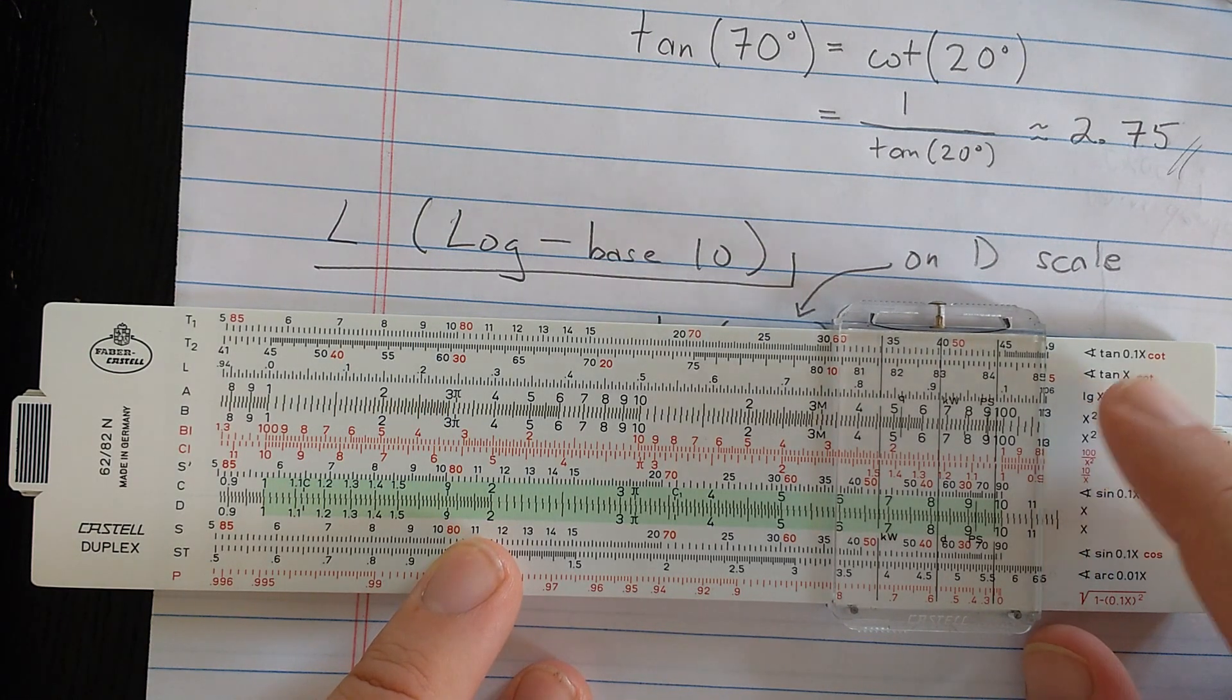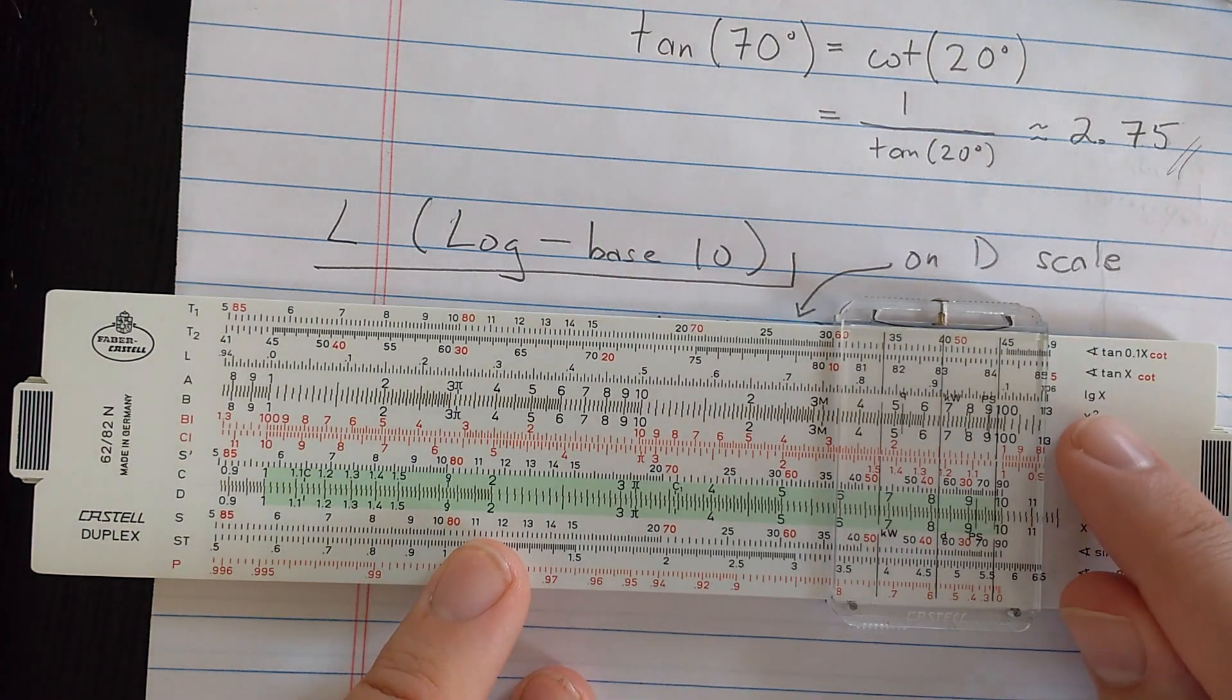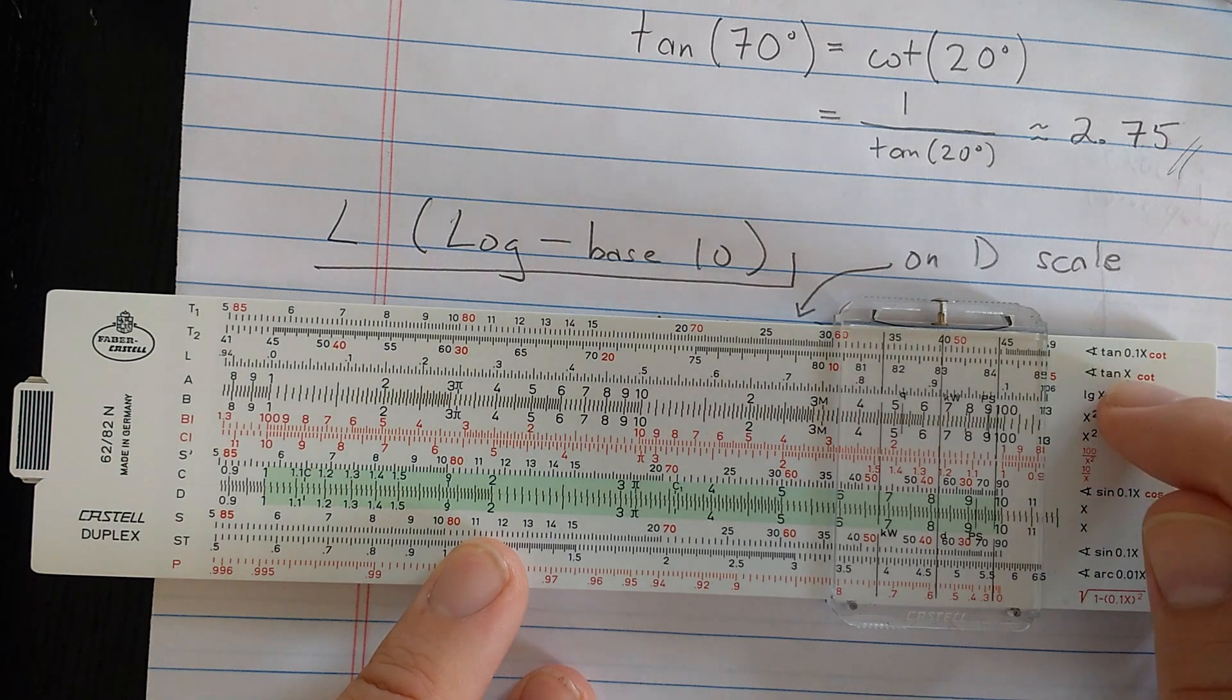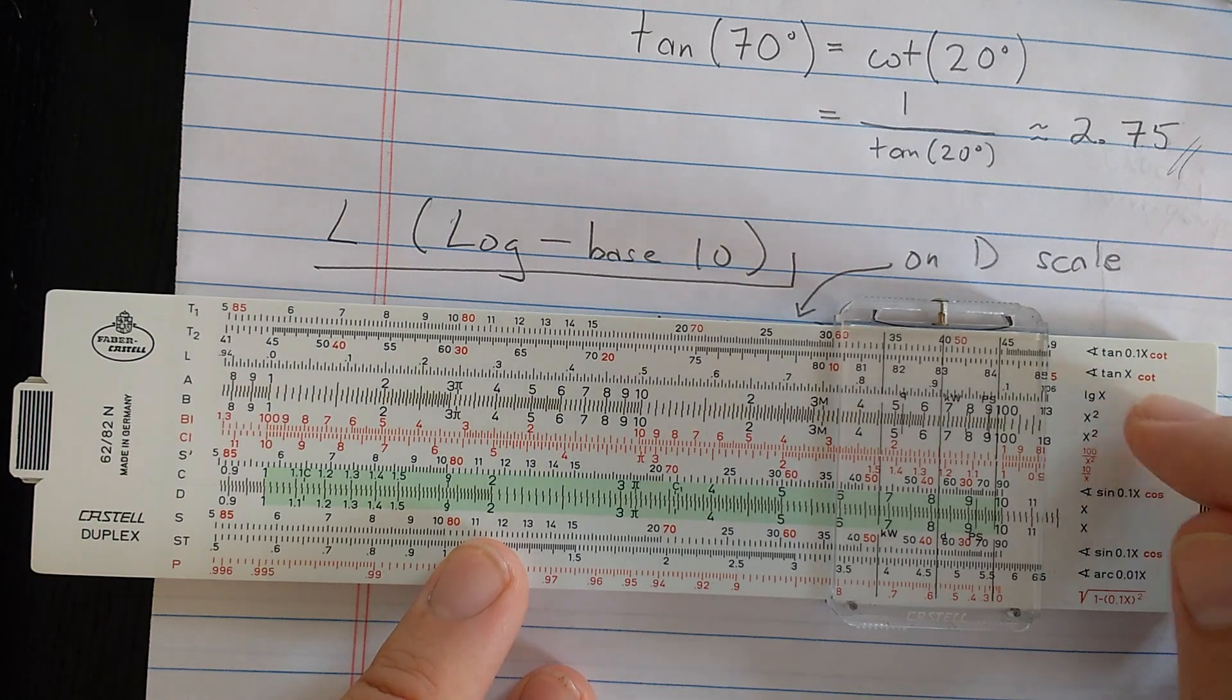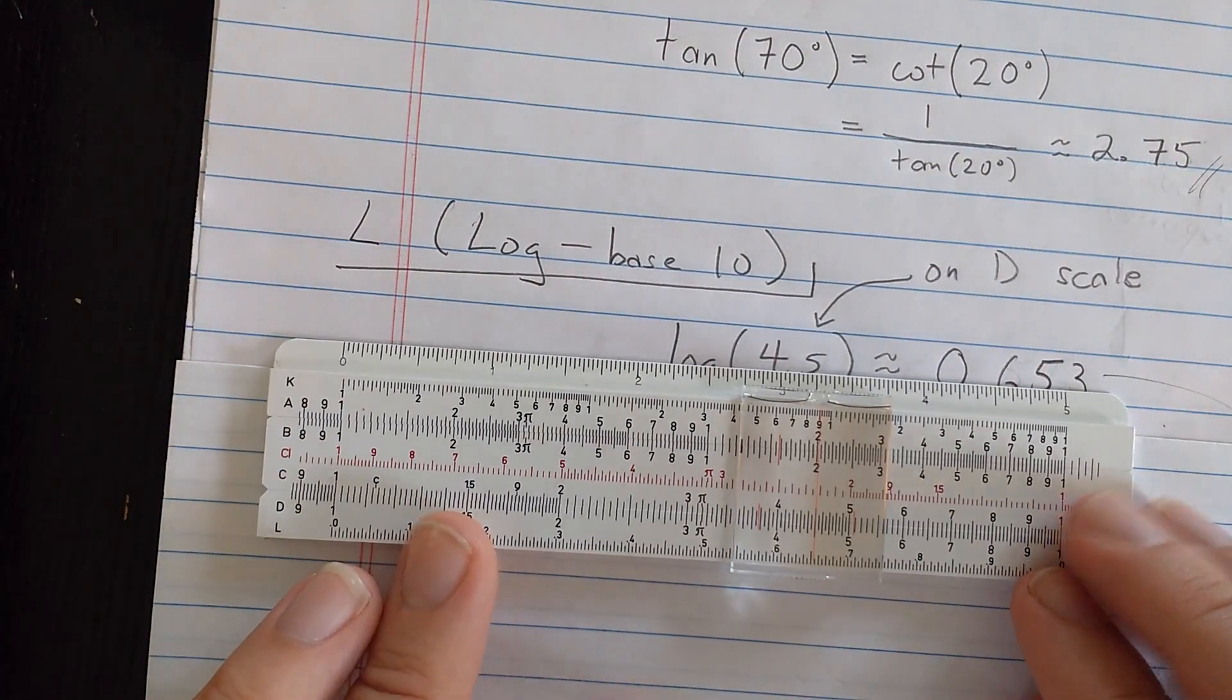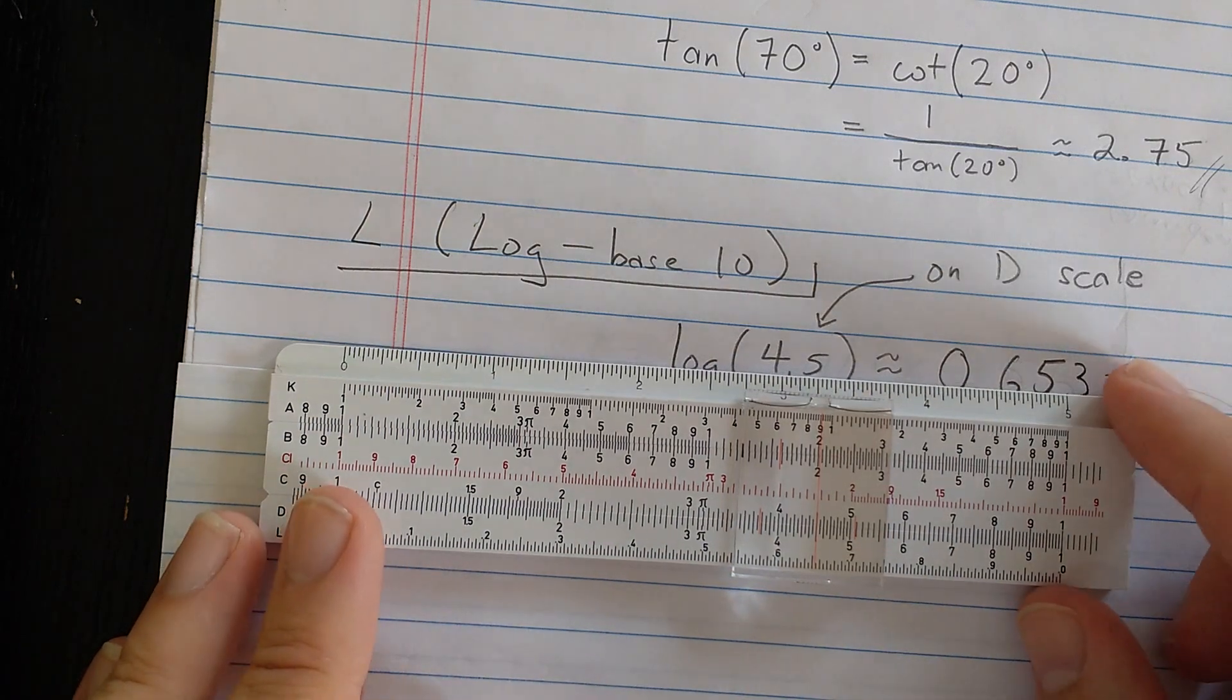But the L scale is simply log of X. So it doesn't do inverse when you go from C or D to L like the sine and the tangent scales do. It actually just computes log. Now, interesting thing is it's actually a linear scale. The divisions are constant. Think about why that's appropriate.